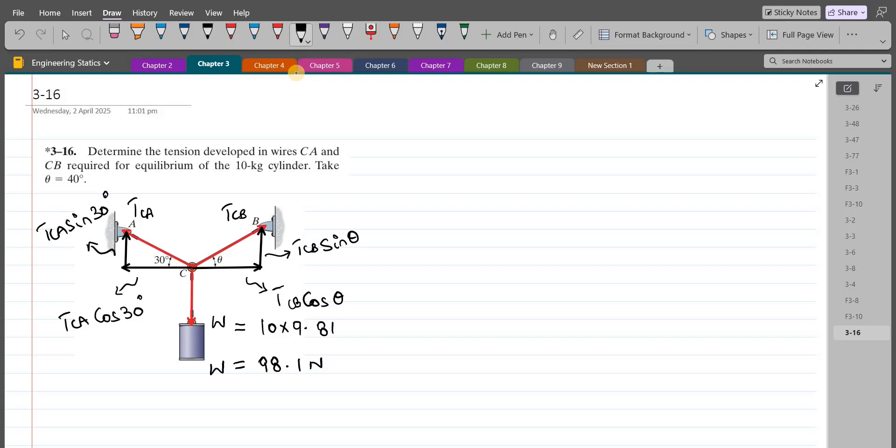So this is our free body diagram. Now we can apply our equations of equilibrium. My first equation is summation of forces in X direction equals zero. I'm considering right-hand side as positive. So we have TCB cos 40 degrees minus TCA cos 30 equals zero. Upon simplification, we have 0.77 TCB minus 0.87 TCA equals zero.